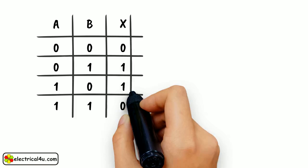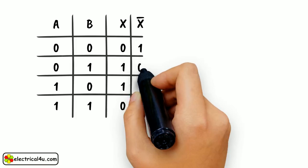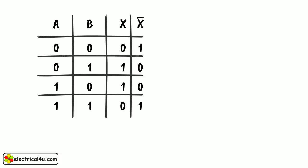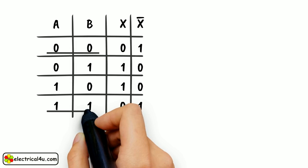But in the case of XNOR gate, the output is 0 when only 1 input is 1, and the output is 1 when both inputs are same. That is either both of them are 0 or 1.